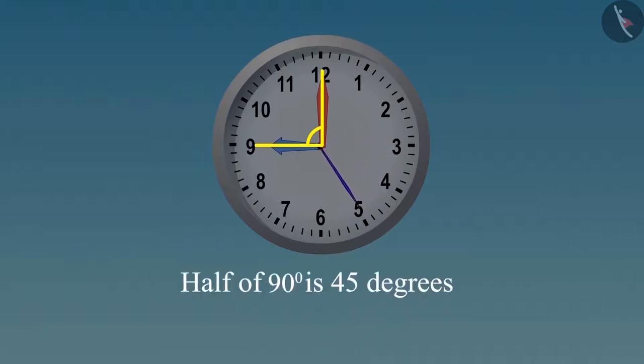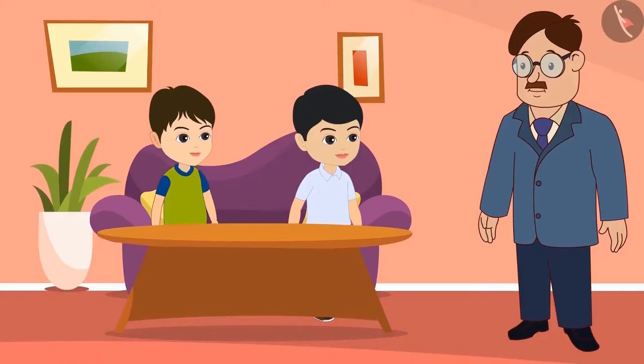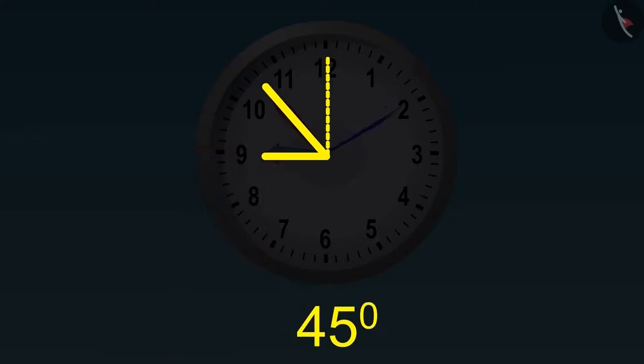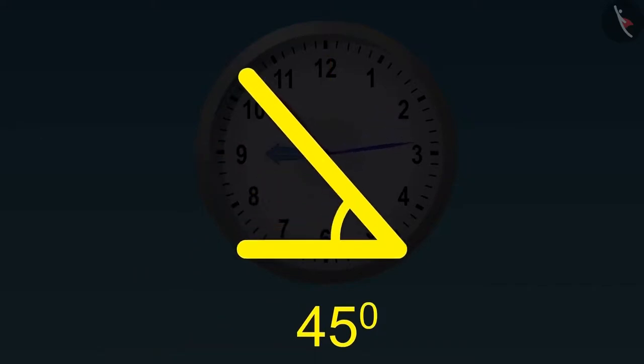Half of ninety degrees is forty-five degrees. Yes, this is half of ninety degrees, that is a forty-five degrees angle.